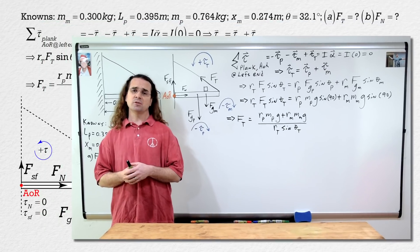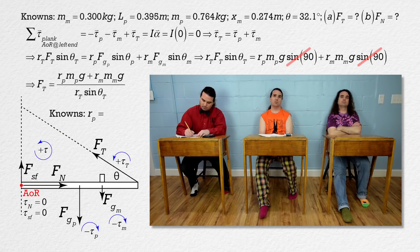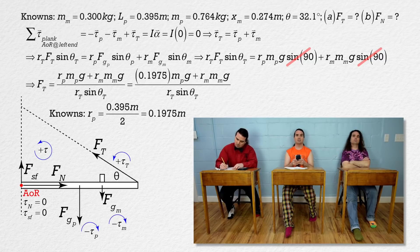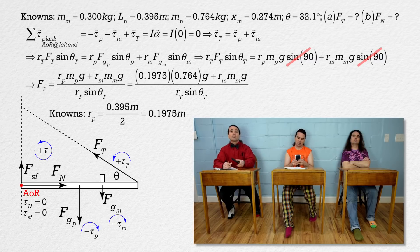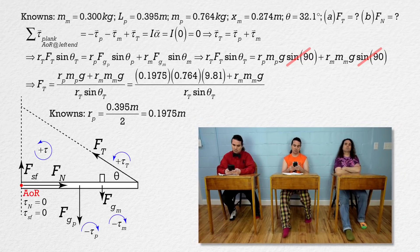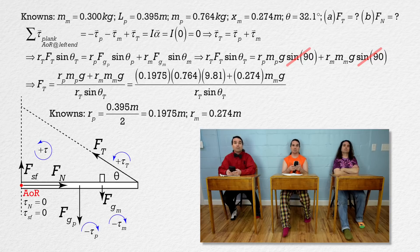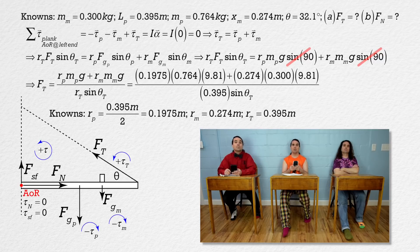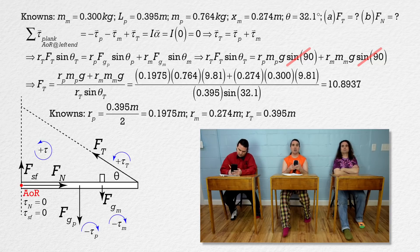Very nice, Billy. Bobby, please substitute in numbers. Okay. The r value for the plank is half the length of the plank because the force of gravity of the uniform plank acts at its middle — so 0.395 divided by 2, or 0.1975 meters — times 0.764 times 9.81, plus the r value for the mass which is 0.274 meters times 0.300 times 9.81, all divided by 0.395 meters times sine of 32.1 degrees. That equals 10.8937, or 10.9 newtons with three significant figures.